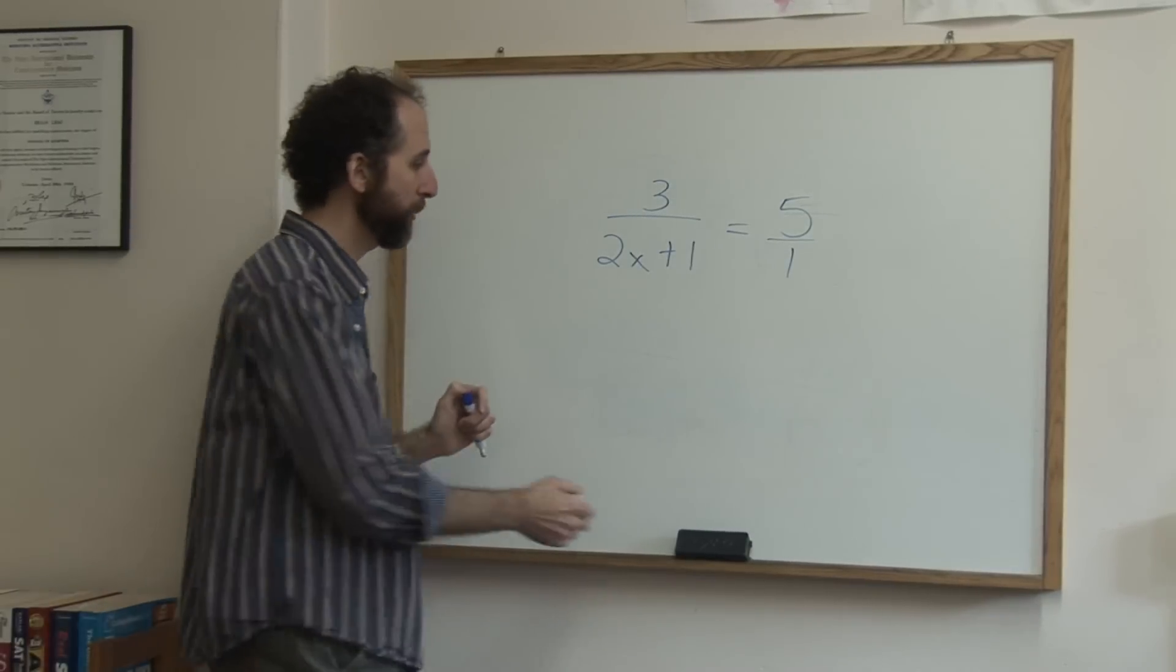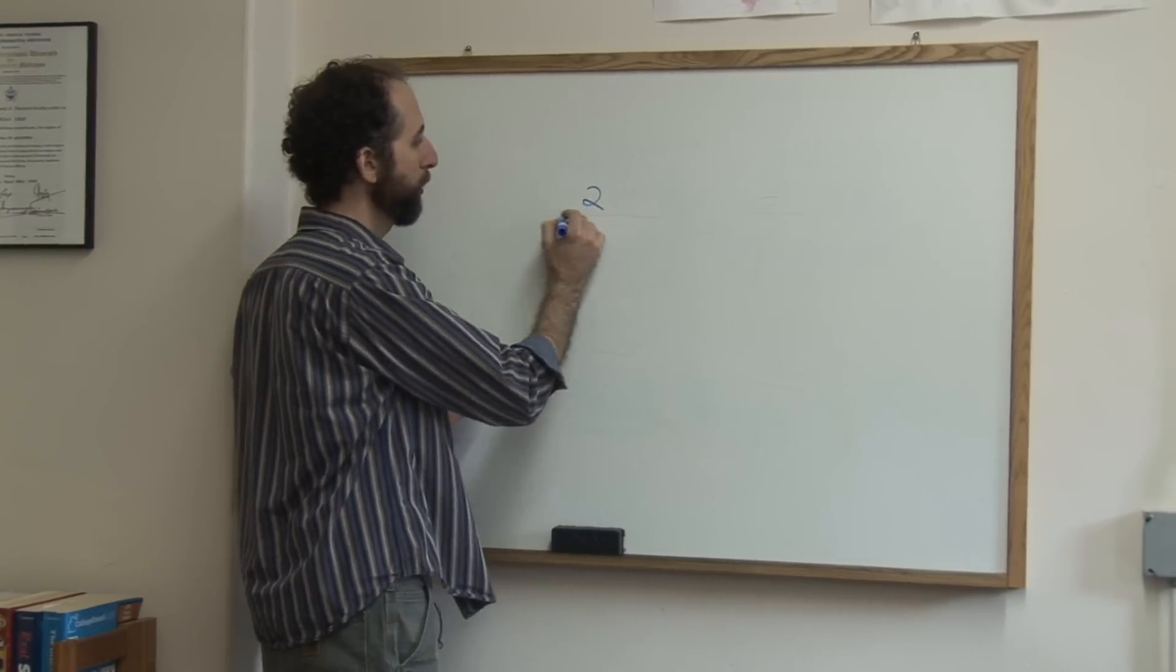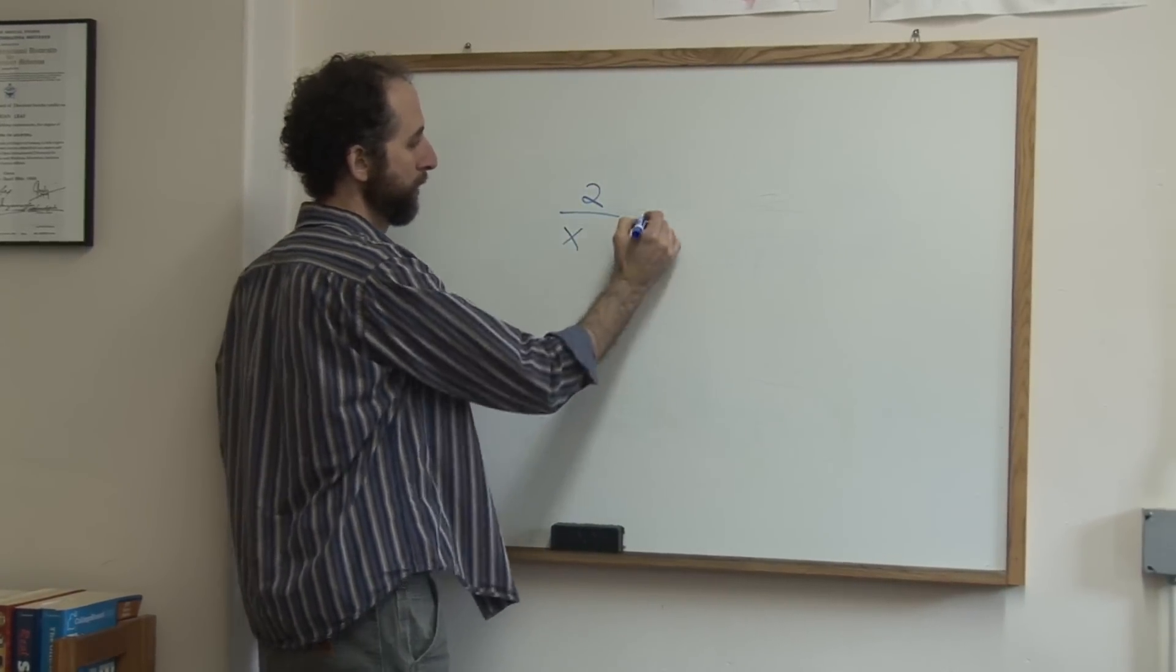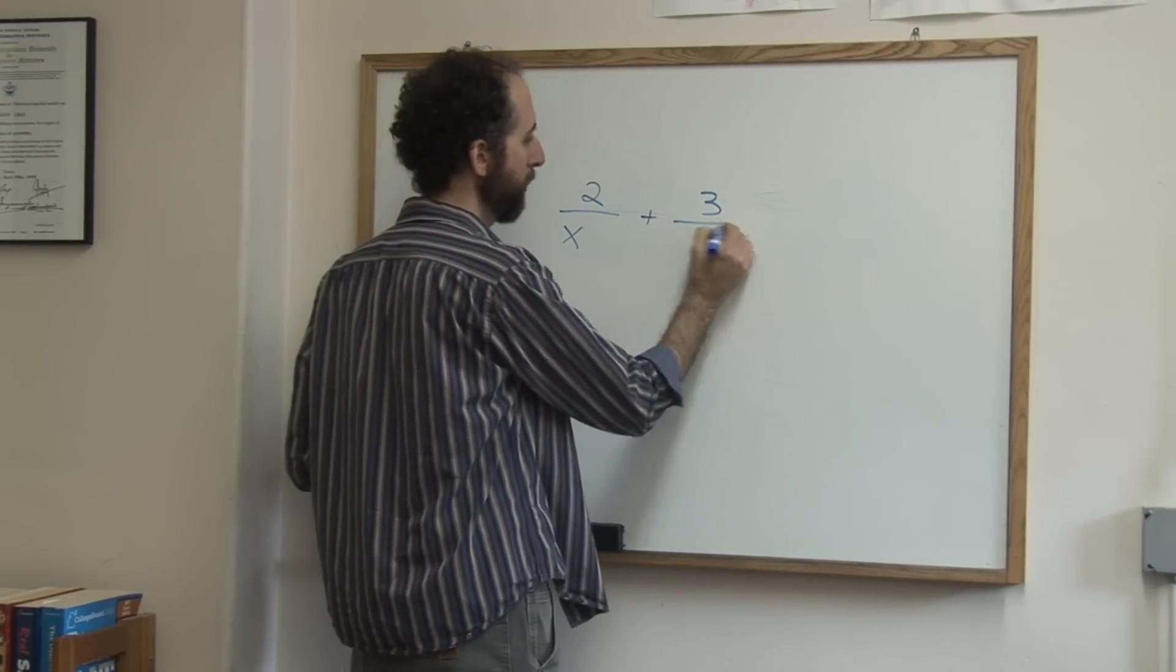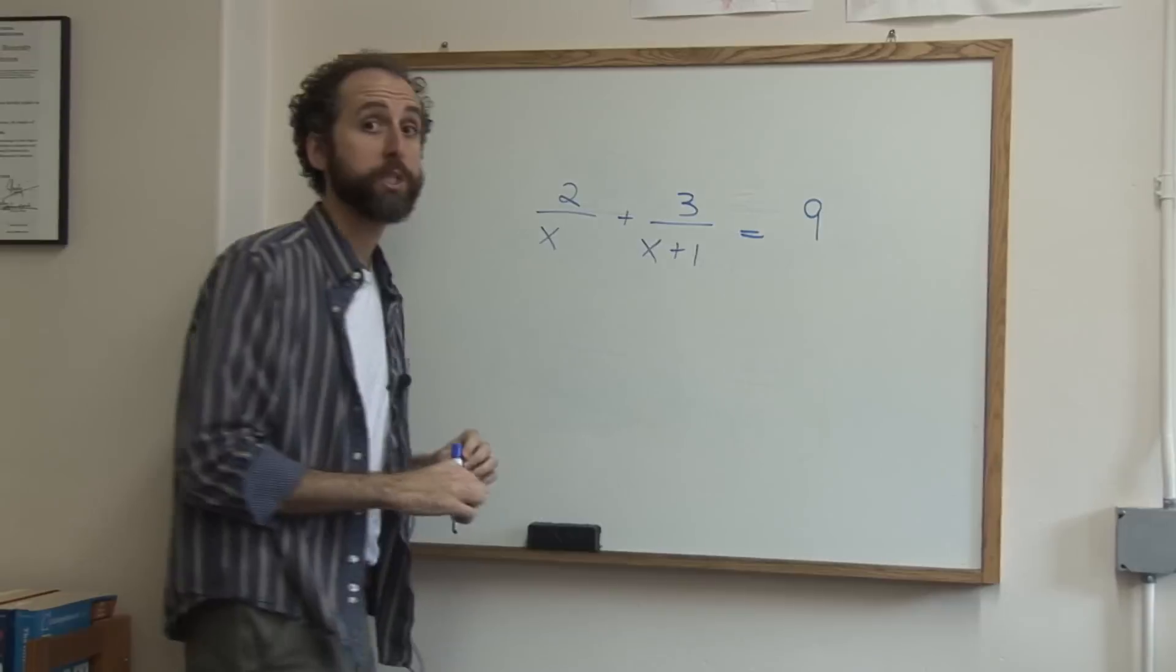But let's take a look at one that's a little bit harder, or more involved. If I had 2 over x plus 3 over x plus 1 equals 9, and I want to solve this one,